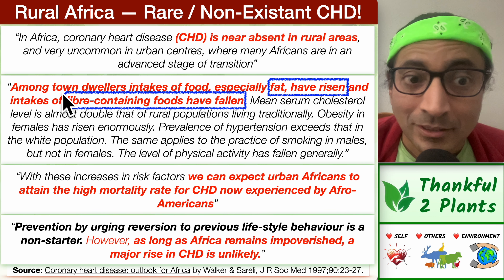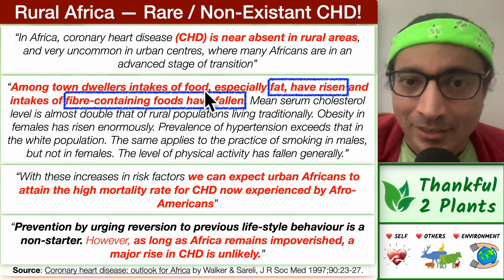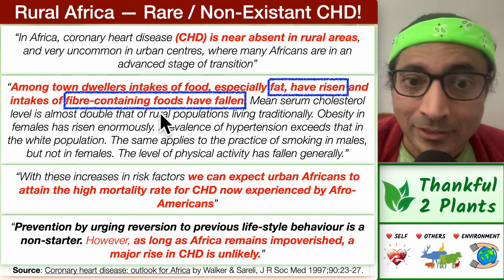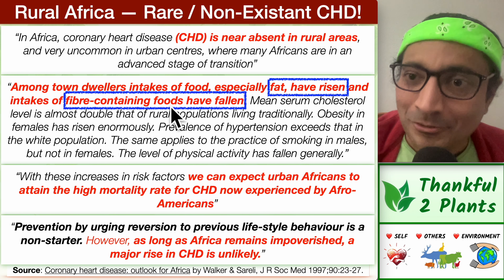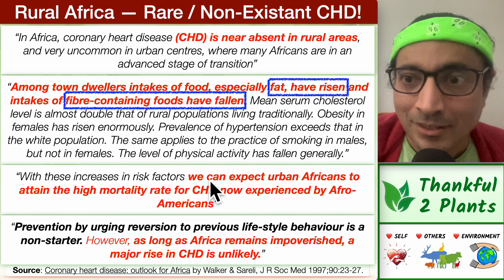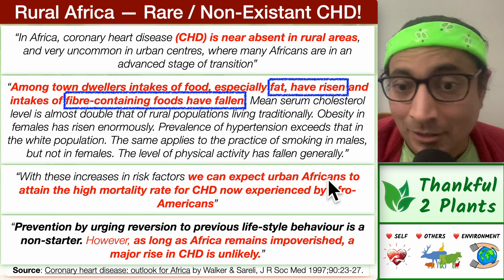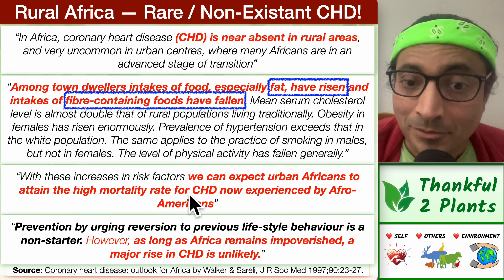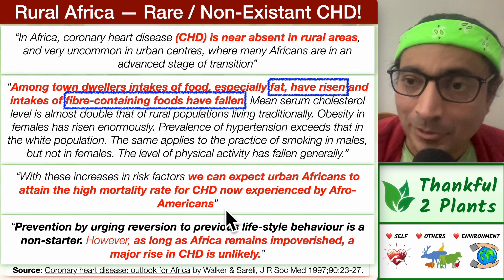The paper says that among town dwellers, food intake has changed: fat intake has increased and fiber-containing foods have reduced — high fat, low fiber. With these nutrition transitions, the researchers worry that urban Africans might start experiencing the same high mortality rates from coronary heart disease currently seen in African-Americans.